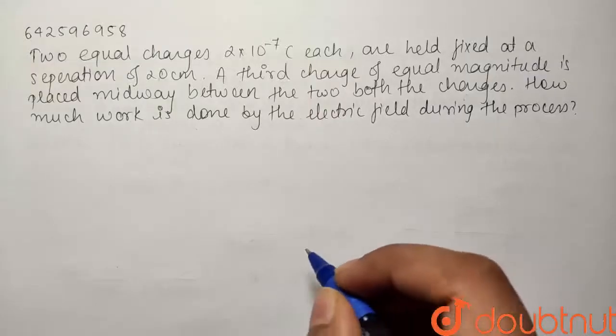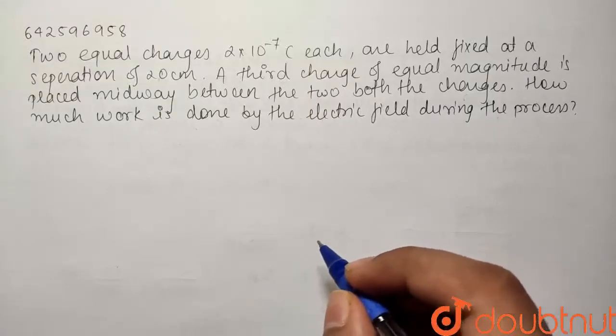Here we have a question from the chapter electrostatics. Two equal charges of magnitude 2×10⁻⁷ coulombs each are fixed at a separation of 20 cm.